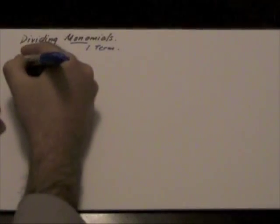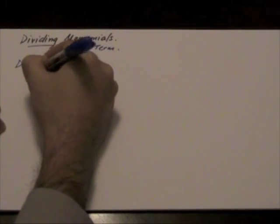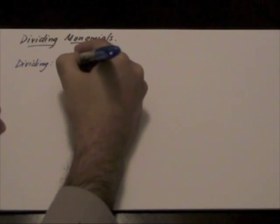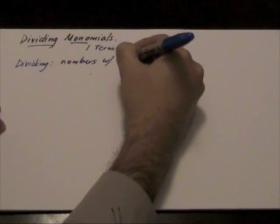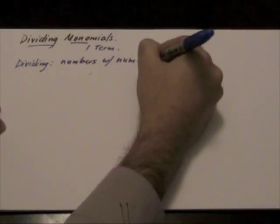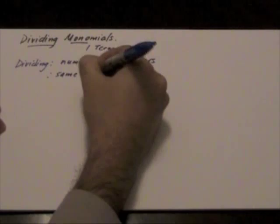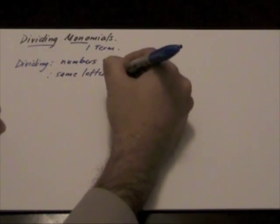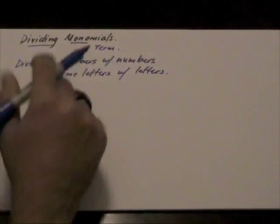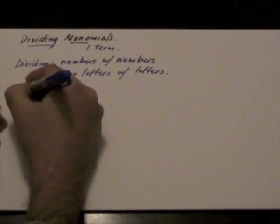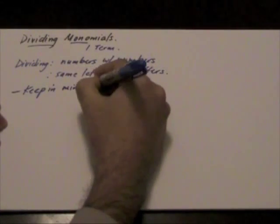So when dividing, same rule applies. We're going to divide numbers with numbers, and we're going to divide same letters with same letters. Again, keep in mind the exponent rule.